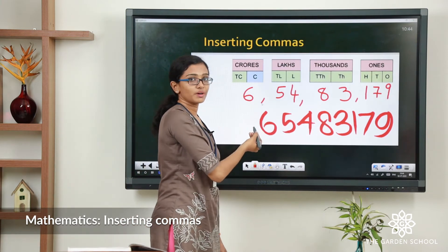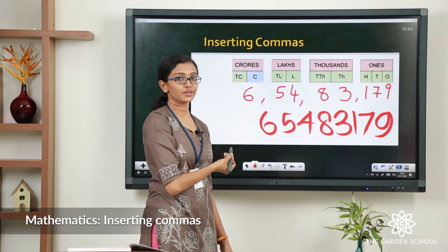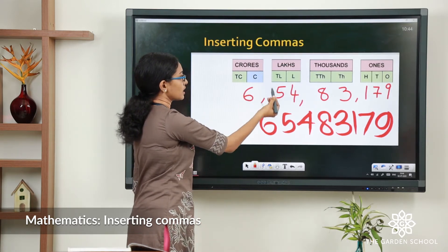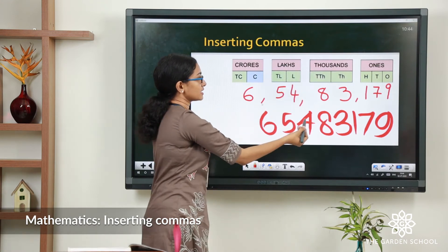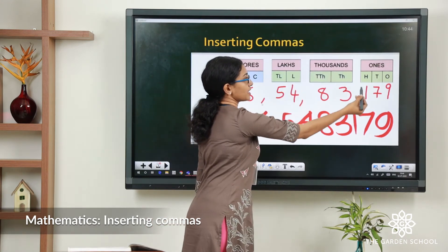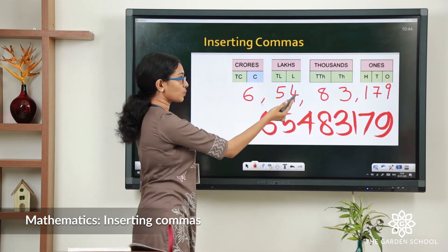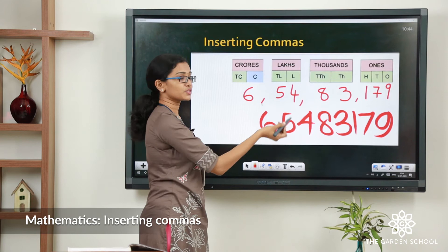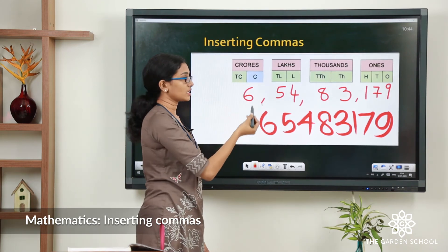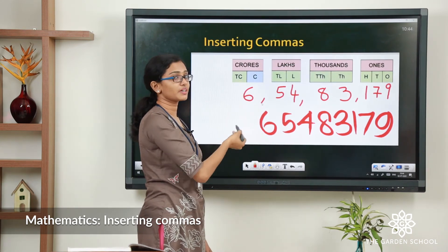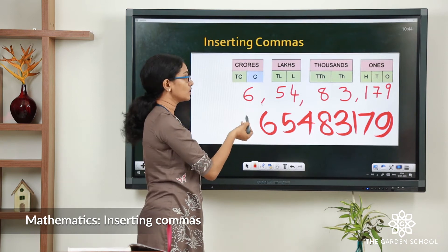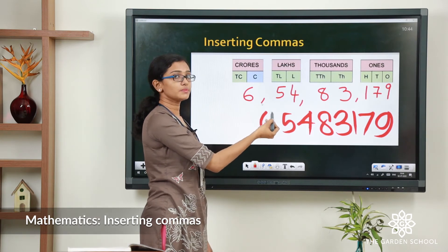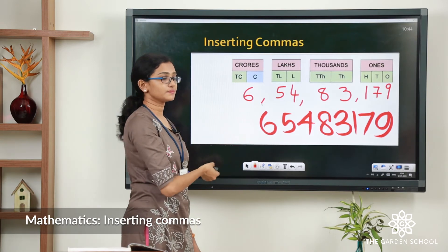We have inserted commas in between. Now, let us try reading this number. This number is 6 crore 54 lakh 83,179. In the 1s period alone, we have to read the place value of each digit. But if 0 comes in any place, the place value is 0 itself — we do not use the word zero in between while reading a number. We have to read the place value of all the other digits instead.